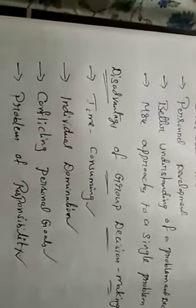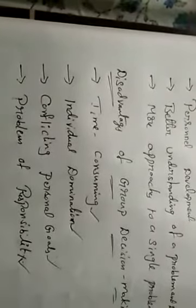The next disadvantage is individual domination. In group decision making, if there are ten members, the most highly qualified and experienced person tends to dominate the remaining people — this is a major disadvantage. Next is conflicting personal goals — while implementing decision making, conflicts may arise. Next is problems of responsibility — in group decision making with so many members, some may be lazier or unwilling to interact. These are the different disadvantages. But overall, group decision making is very effective for team building.